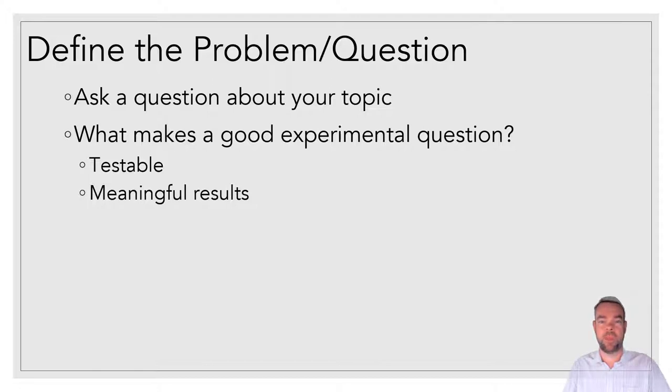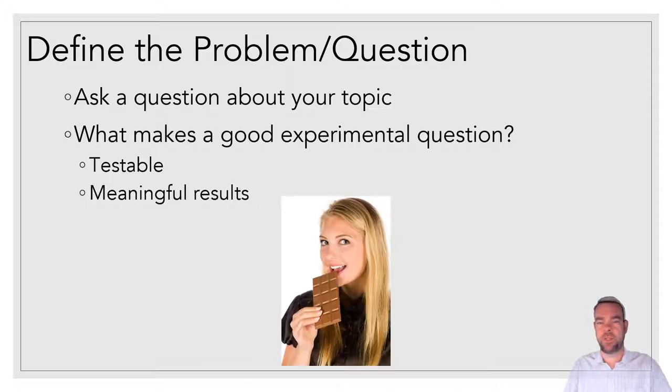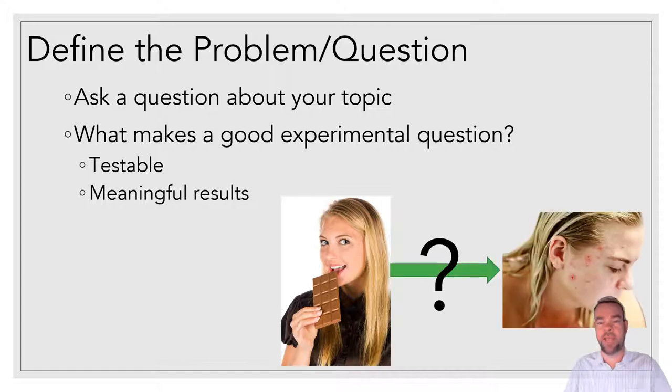So you would put rats under differing amounts of UV radiation and measure the amount of cancer they got, skin cancer. So the results also have to be meaningful. Answering what do people prefer more, chocolate or vanilla? Scientifically, that's not really a relevant question. But definitely knowing about UV and the link to melanoma, that would be a scientifically meaningful answer. So for us, since you guys are teenagers, I thought about this age-old question. Does chocolate cause acne?